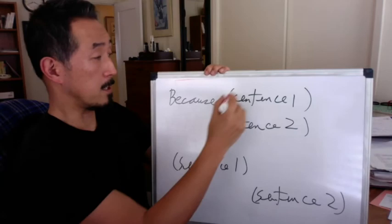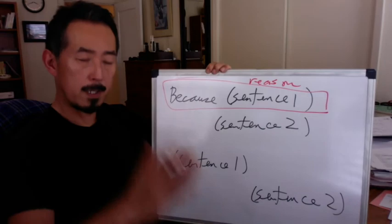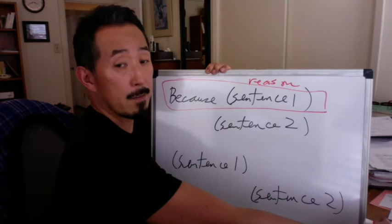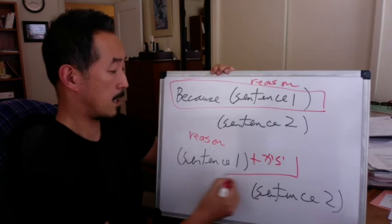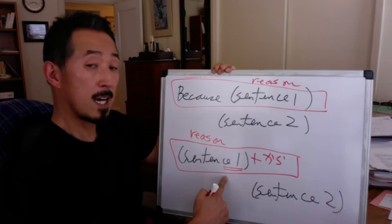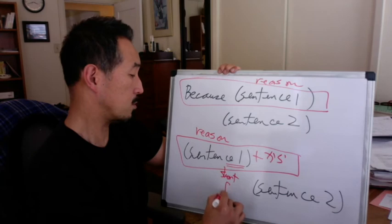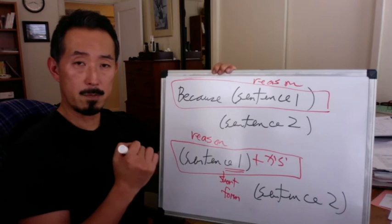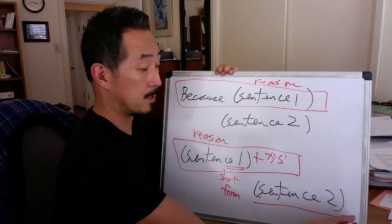Today's new topic is the 'because' sentence: sentence one, sentence two. This is the reason — always, always reason comes first. Don't put the reason after the main sentence. The reason sentence plus から — that's the reason sentence. Make sure you change the last part of the reason sentence to short form — whether it's a verb, adjective, or noun. If it's negative, change to short form negative. If it's past tense, change to short form past tense. Reason, から, sentence two — that's the main sentence.